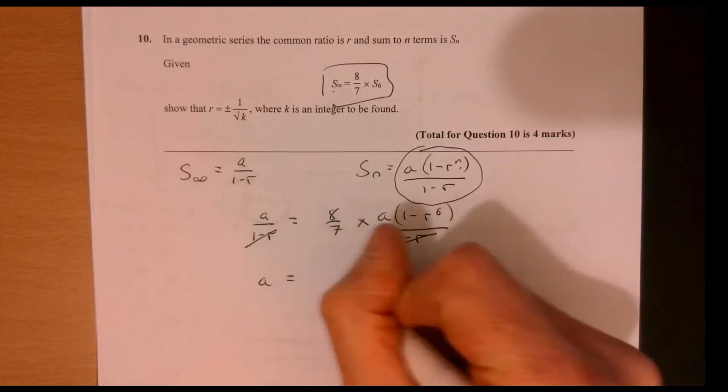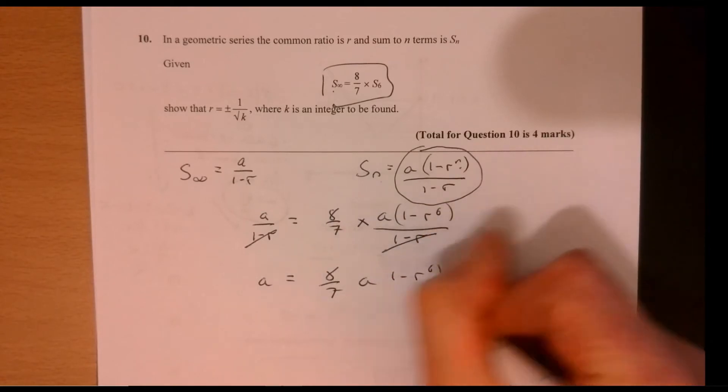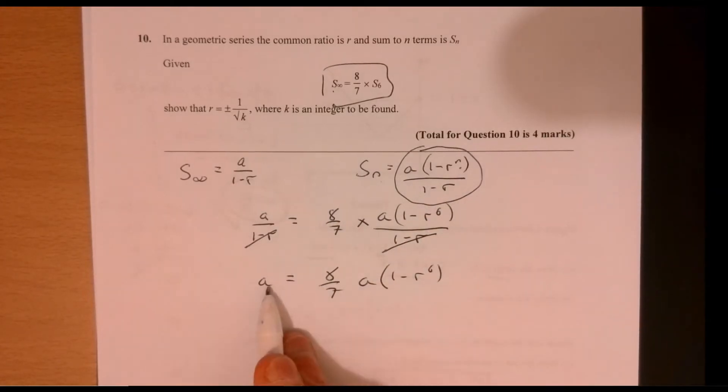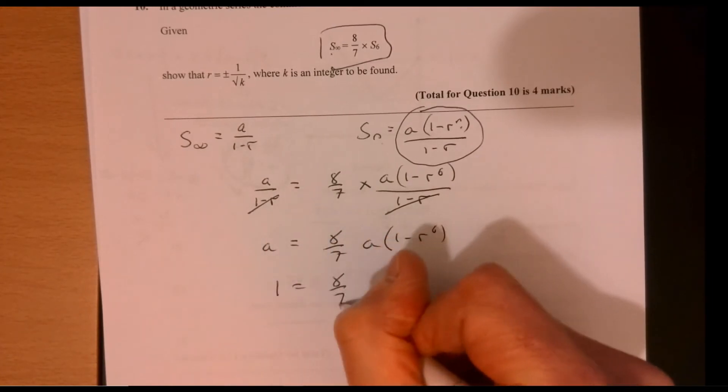So that gives me A equals 8 over 7, A, 1 minus R to the 6. Divide both sides by A. So here we go. We're nearly there now.